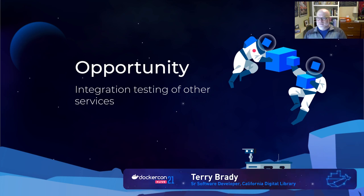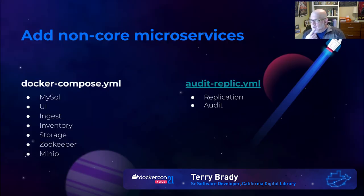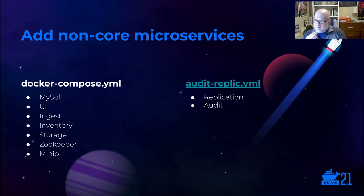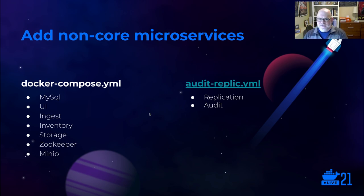This setup of Docker Compose files also gave us an opportunity to integration test with other services. We run replication and audit services that we don't often need for the majority of development tests. But when we do, we have a separate Docker Compose file — audit_replic.yml — that defines two additional Tomcat 8 containers which run in combination with the core microservices, allowing us to run an even larger stack of services and test them together.